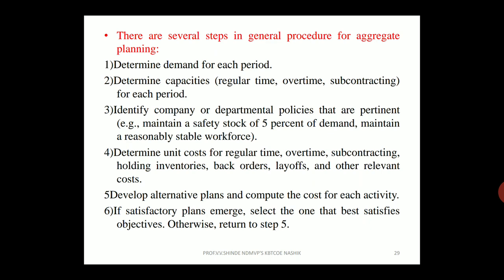There are several steps in the general procedure for Aggregate Production Planning. Step one: determine the demand for each period. Step two: determine capacities for each time interval — regular time, overtime, and subcontracting. Step three: identify company or departmental policies that are pertinent, such as maintaining a safety stock of 5% of demand and maintaining a reasonably stable workforce. Step four: determine unit costs for regular time, overtime, subcontracting, holding inventories, back orders, layoffs, and other relevant costs.